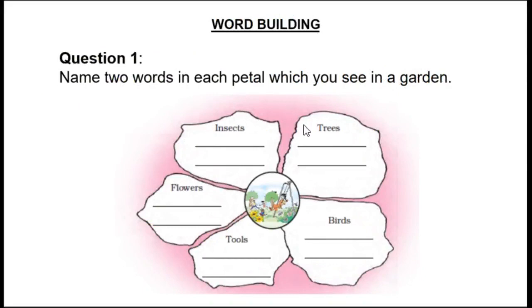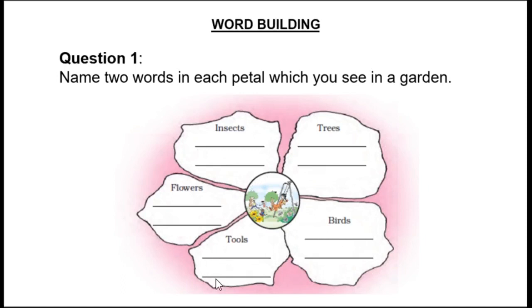For the Word Building activity, you have a picture with petals. In each petal, write two words. The categories are: insects-related words, trees-related words, birds-related words, tools-related words, and flowers-related words.